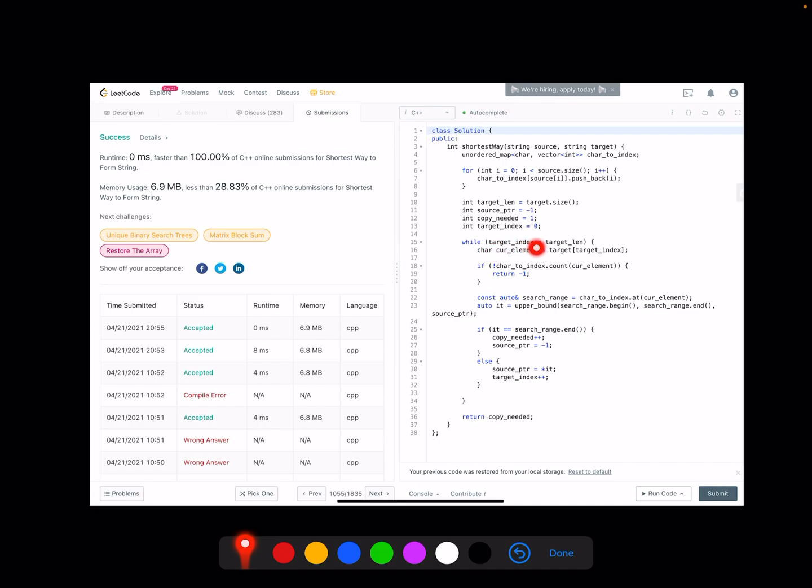When we reach the end of the target array, we terminate the whole process. Then we temporarily save the target character as current element. If our hash map doesn't have this element, of course we are not able to formulate this string eventually. So we will return minus one directly here.